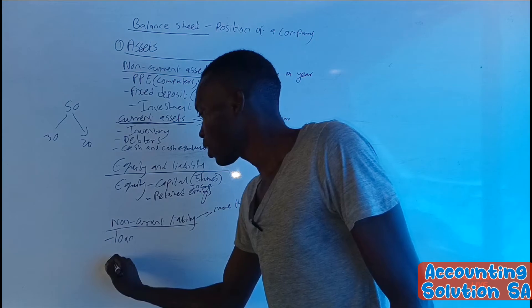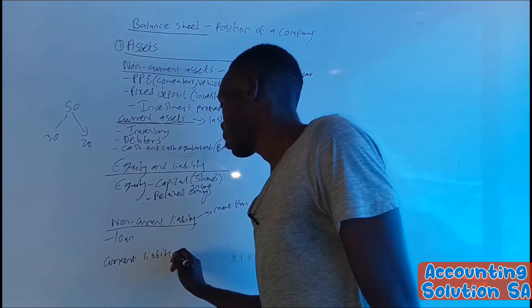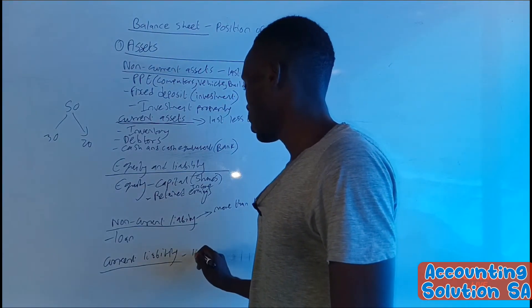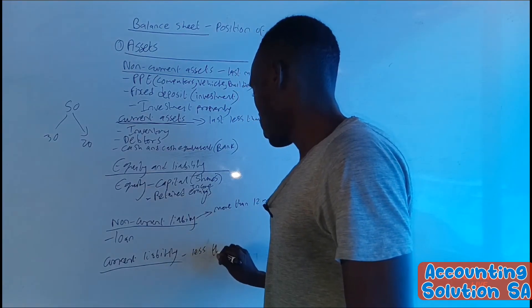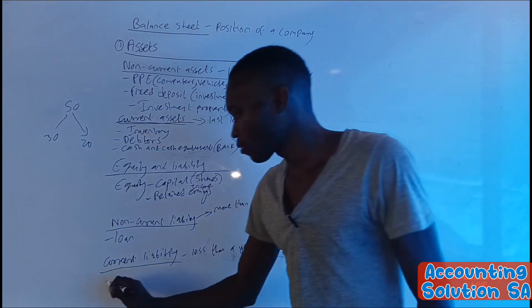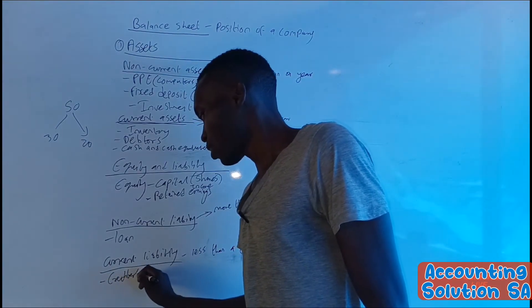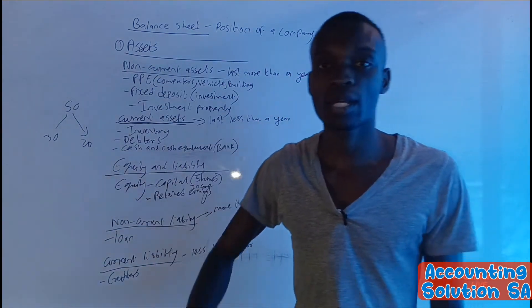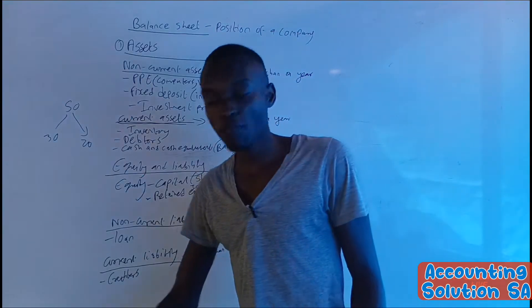Then after that, we're going to have our current liability. When we talk about current liability, it's similar with current assets because they last less than a year. For example, we have our creditors. A good example of creditors is our supplier. Those who supply to us on credit. Those who supply inventory to us on credit. We have to pay them within 12 months because we are going to sell that inventory within 12 months.